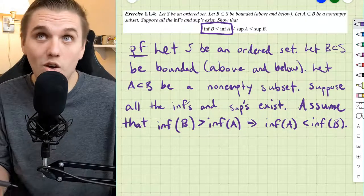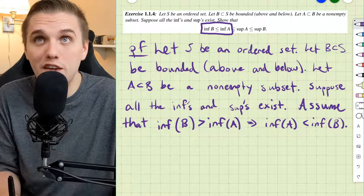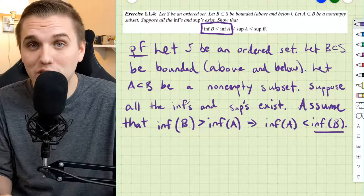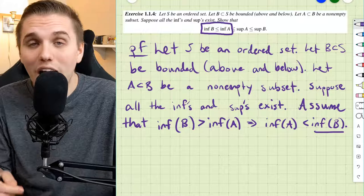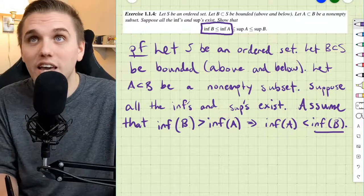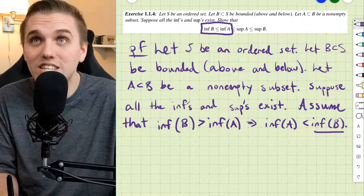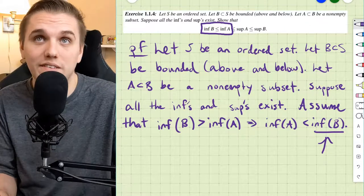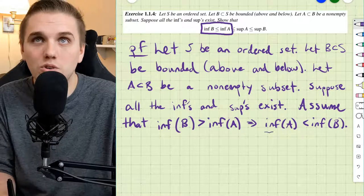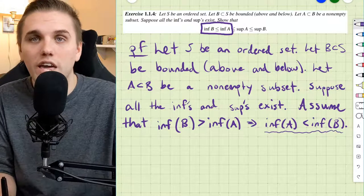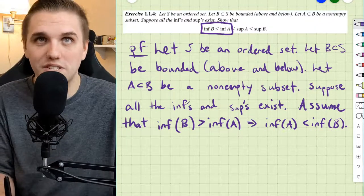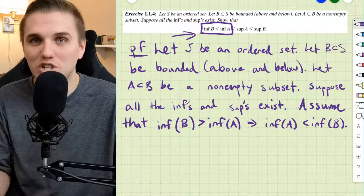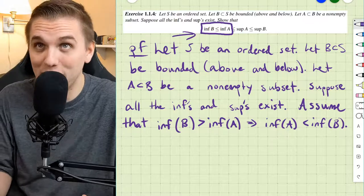So what does that mean? Well, the infimum of B is a lower bound to B, and so every element in B is at least as large as this infimum of B here. Now, my goal is to come up with a contradiction somehow, because I'm assuming the opposite of the thing I'm trying to prove, which is supposed to be problematic somehow.